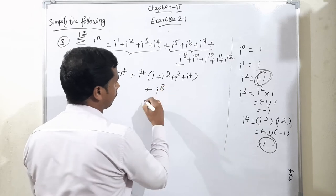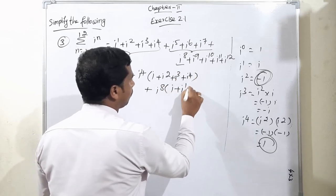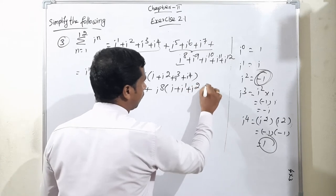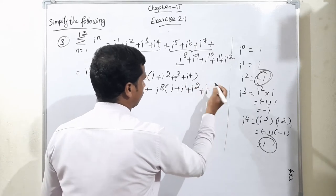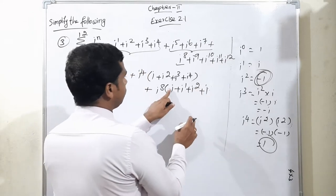Here also i power 8, if I take common outside, the balance is i to the power 1, i to the power 2, and so on.